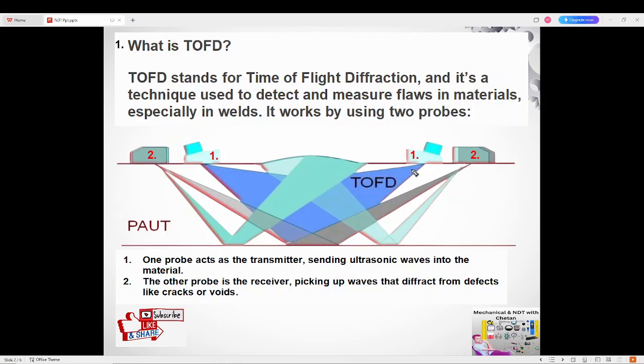On the screen, just in TOFD, one probe is here and second probe is here. The first probe acts as a transmitter, sending ultrasonic waves. And if any crack is there, then second transducer is receiver, picking up waves that diffract from defects like cracks and voids. If any crack is there, first is transmitter, second is receiver, then we will receive signals, ultrasonic sound waves, and we found out cracks and defect indications.